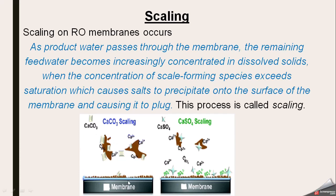In this diagram, you can see here is a membrane and we have scale-forming compounds like calcium carbonate and calcium sulfate. After some time, when their concentrations increase, they settle on the membrane pores and plug them. Pure water passes through the membrane, but now the pores are blocked, so we cannot get further good quality water.